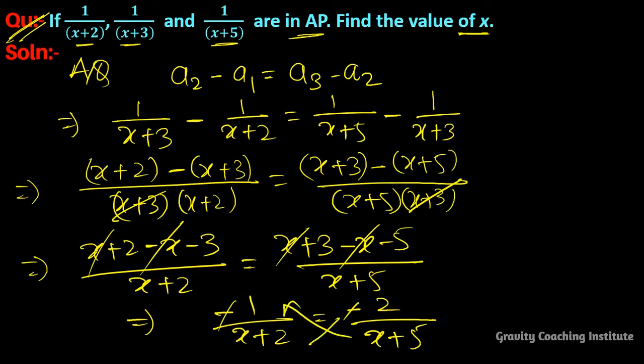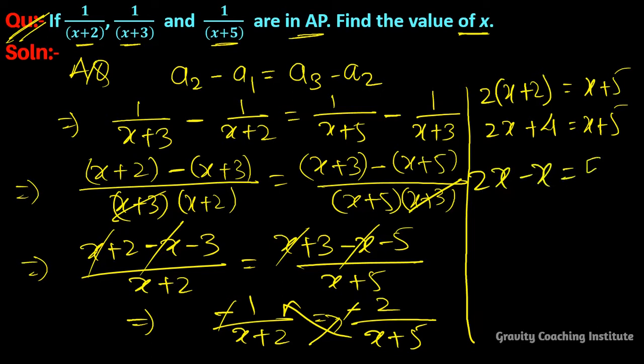Minus cancel and after cross multiplication we get 2 times x plus 2 equals x plus 5. So 2x plus 4 equals x plus 5.